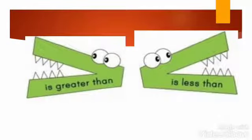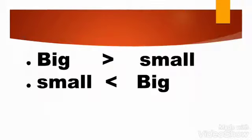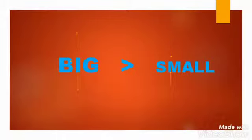Let me give you an explanation about greater than and less than. We use these signs to compare numbers. The less than sign and the greater than sign look like a V on each side. To remember which way around the signs go, just remember: big is greater than small, and small is less than big. The small end always points to the smaller number.